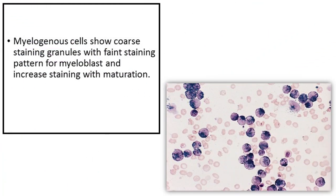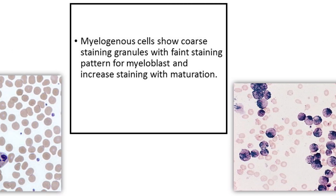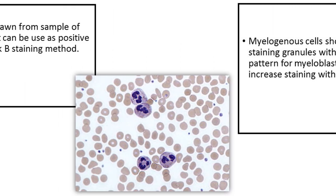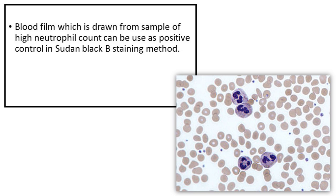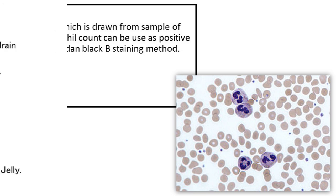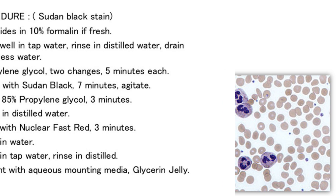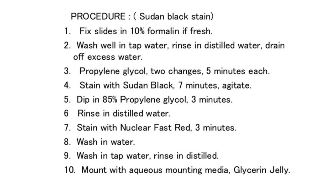Myelogenous cells show core staining in the primary and secondary granules, with a faint staining pattern for myeloblasts and increased staining with maturation. A blood film drawn from a sample of high neutrophil count can be used as a positive control in Sudan Black B staining. For the staining procedure, please refer to your laboratory standard operating procedure.